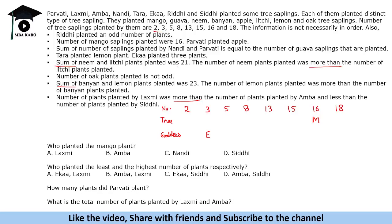The sum of neem and lychee plants was 21, and the number of neem plants was more than lychee. Now 21 will not be possible for all values. Starting from the highest: 18 plus 3 is possible. 16 plus 5 is not possible because 16 is already mango. Then 15, 13, 8 is another possibility. So we get a couple of possibilities — let's read further to solve it.